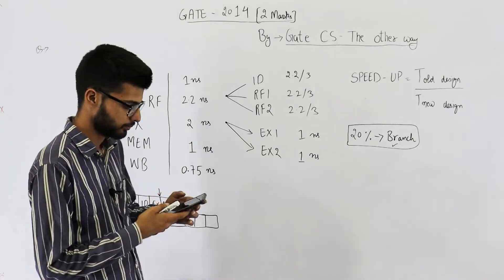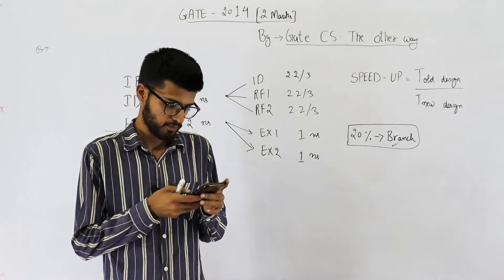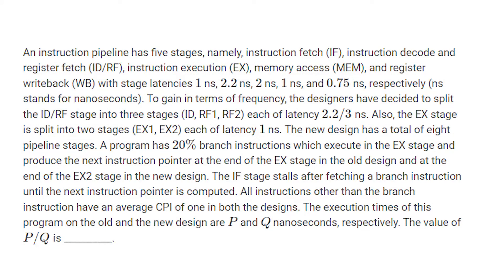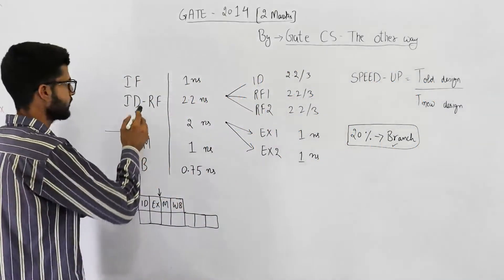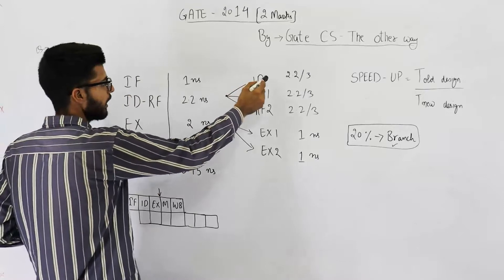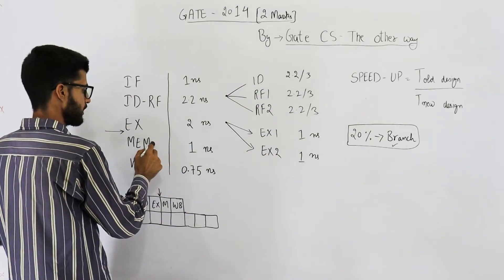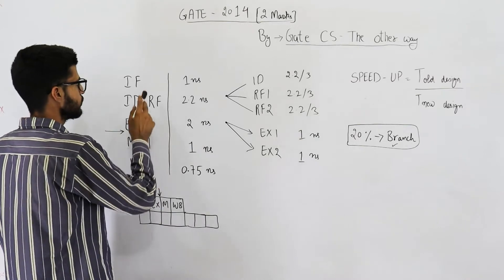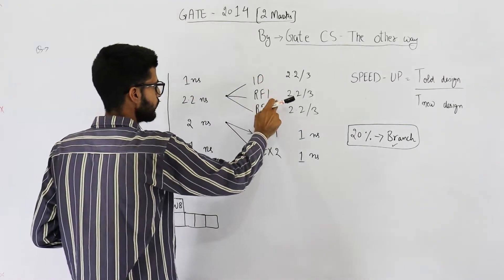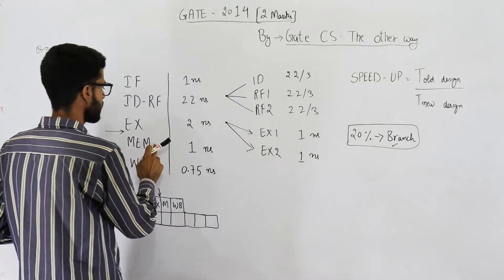Also the EX stage is split into 2 stages, EX1 and EX2, each of latency 1 nanosecond. The new design has a total of 8 pipeline stages. So the new design is IF, ID, RF1, RF2, EX1, EX2, memory access, and writeback — that's 1, 2, 3, 4, 5, 6, 7, and 8.